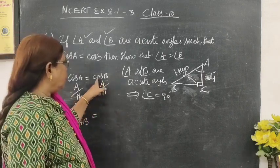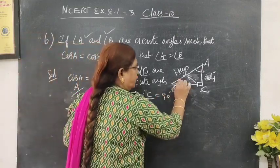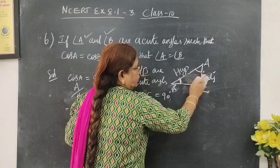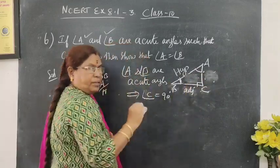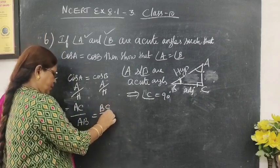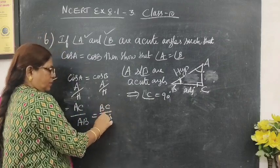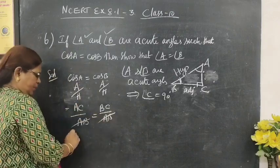Next, cos B. For angle B, consider angle B now. BC is the adjacent side. So here you write BC by hypotenuse. So cos B equals BC by AB. AB cancels.